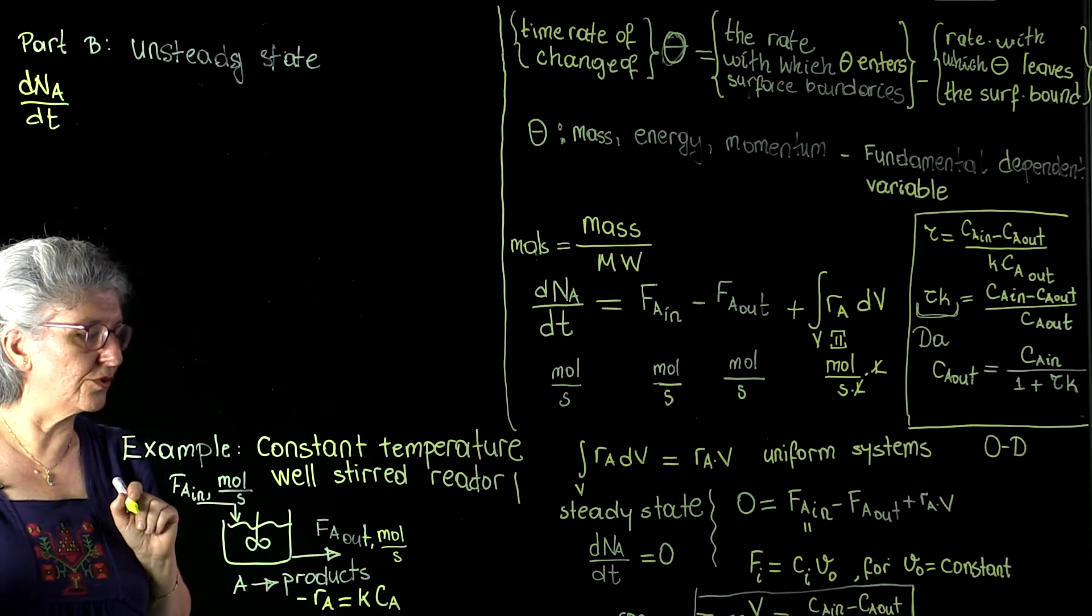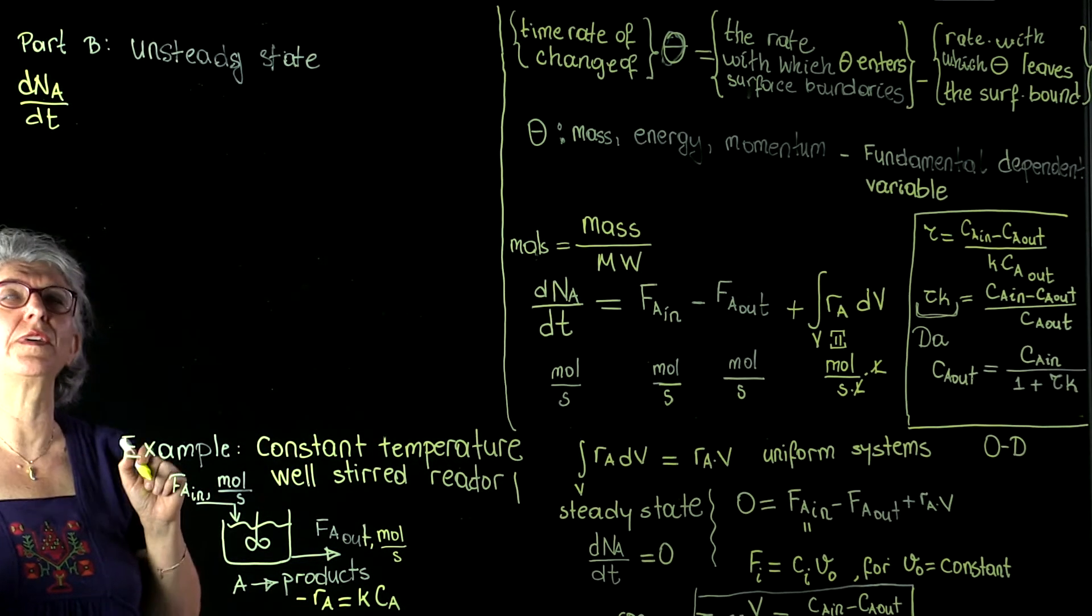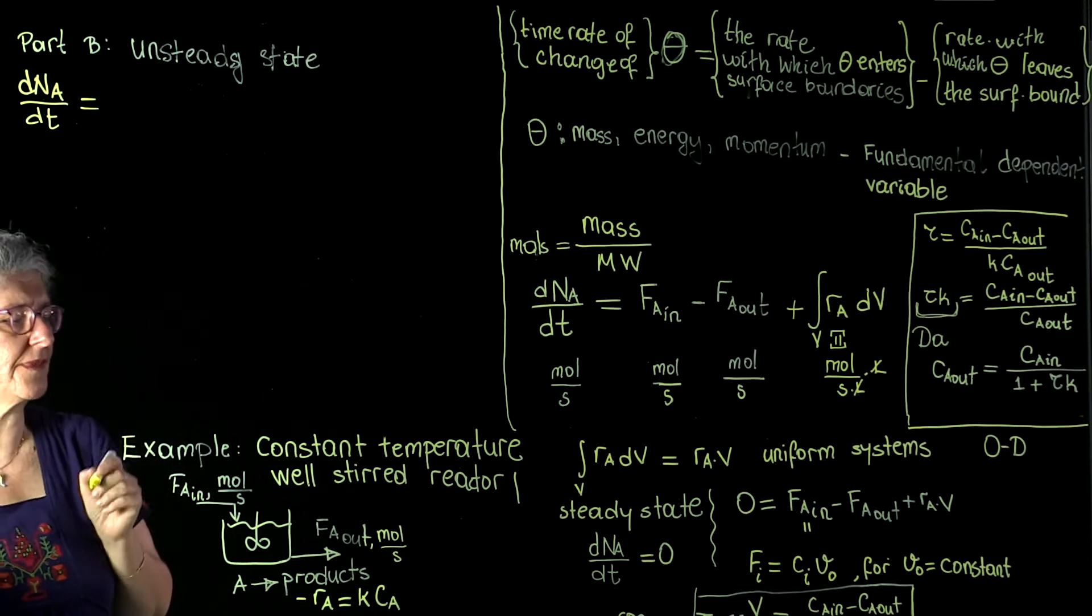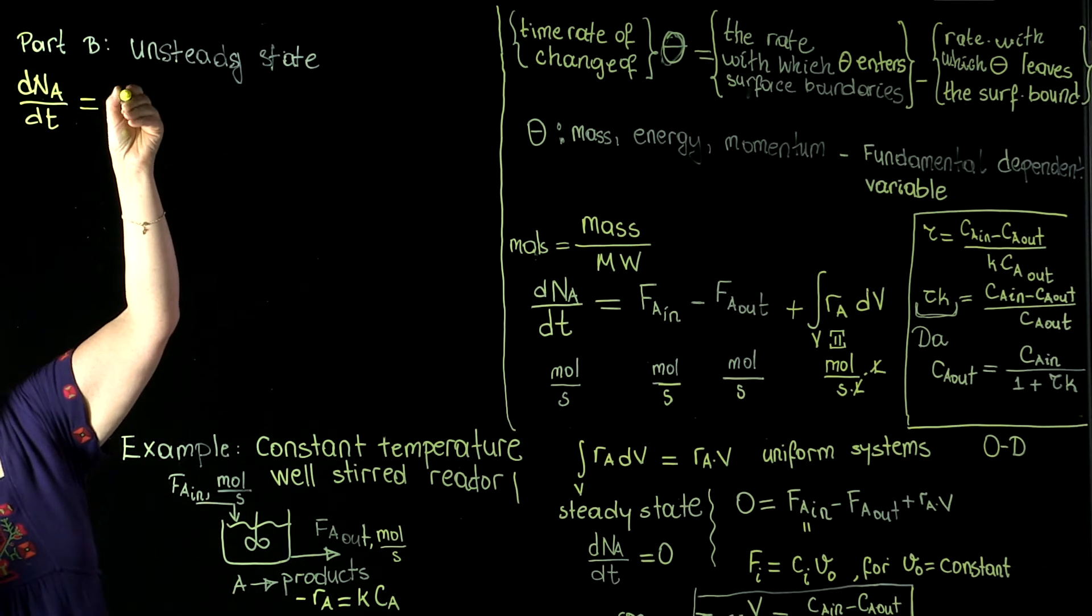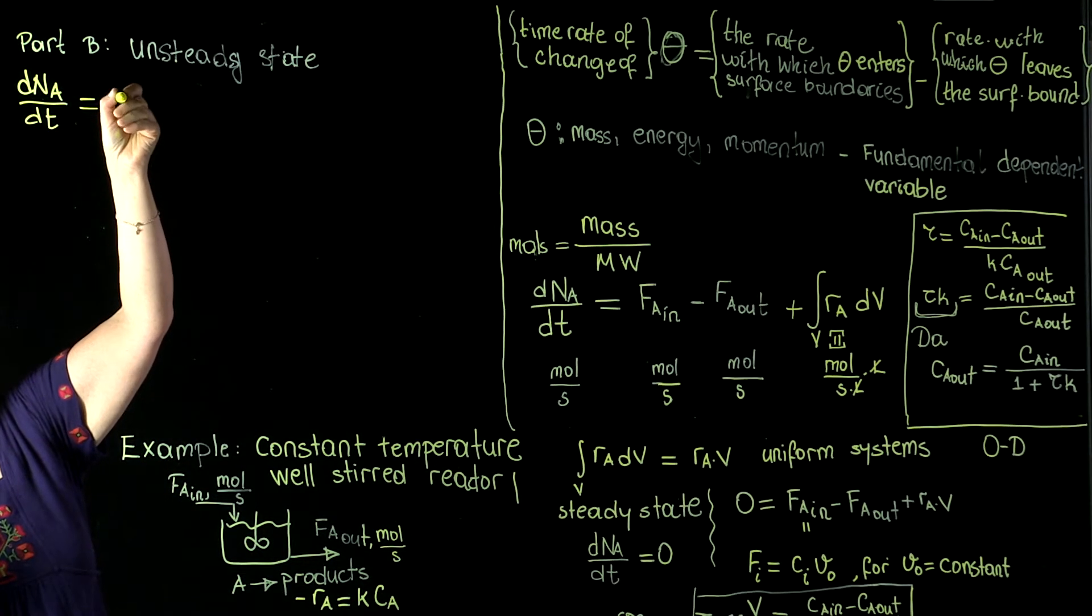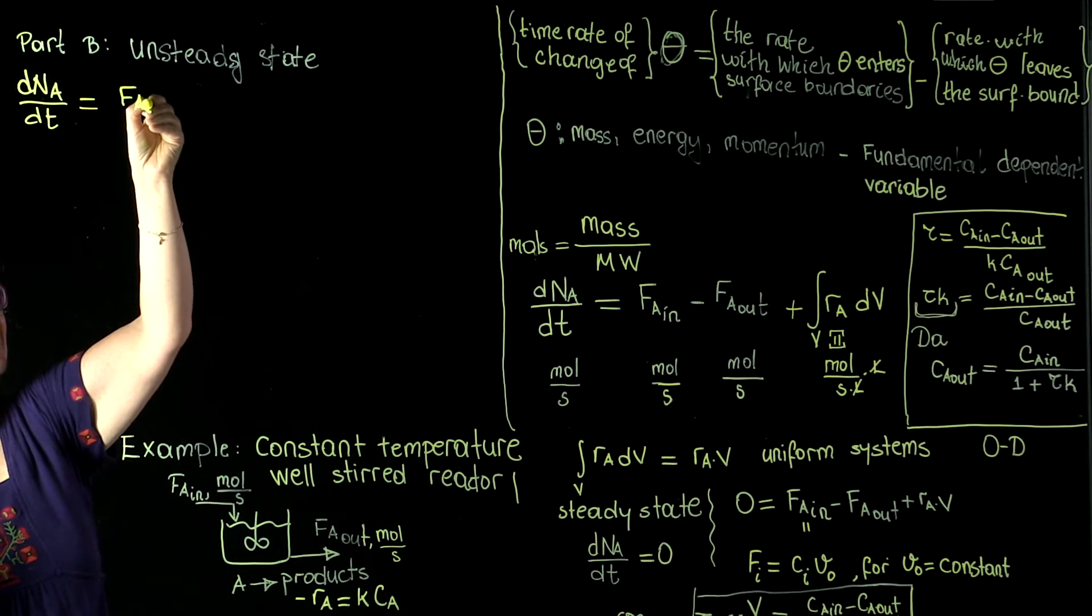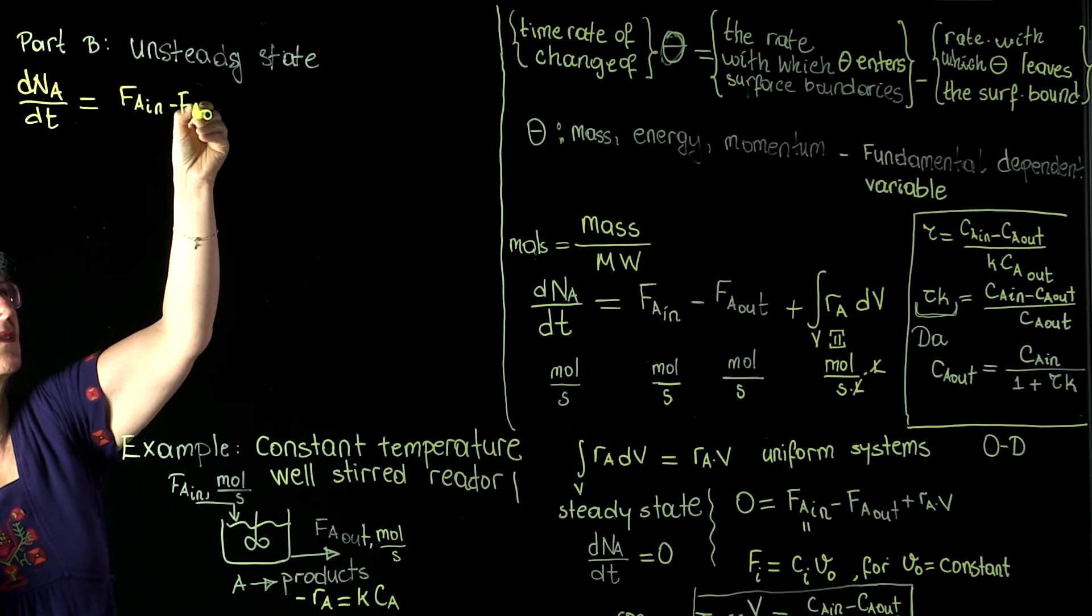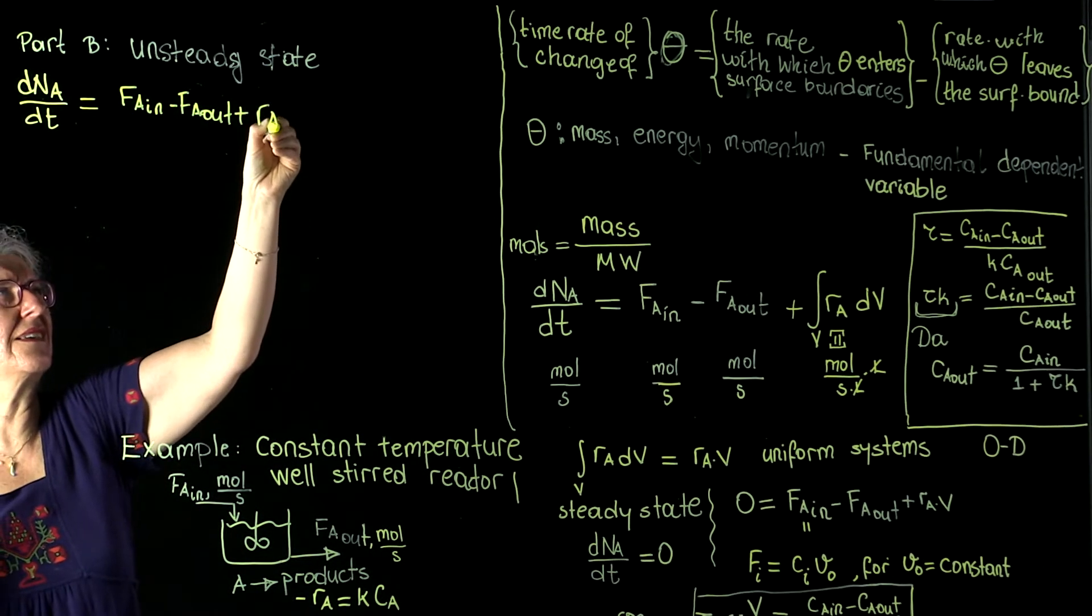Startups and shutdowns are very good examples of the unsteady state behavior. dNA/dt is equal to FA in minus FA out plus RA times V.